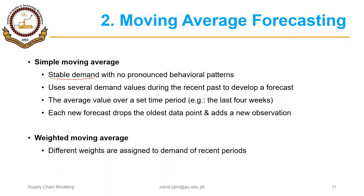Weighted moving average assigns different weights to demand of recent periods. In simple moving average we assign equal weight to the demand data of each period, but in weighted moving average the weights assigned are different.